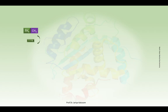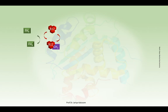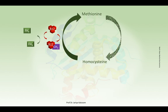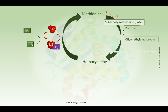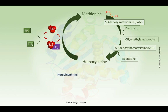Methylated tetrahydrofolate can donate its methyl group in the presence of vitamin B12 to homocysteine, which is converted to methionine. Methionine can be converted to S-adenosylmethionine in the presence of ATP. S-adenosylmethionine can then donate the methyl group to various acceptors — for example, it may donate the methyl group to norepinephrine, which is converted to epinephrine.